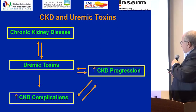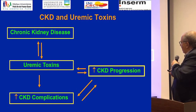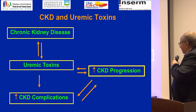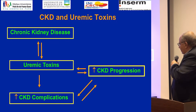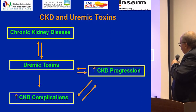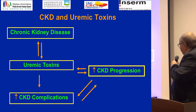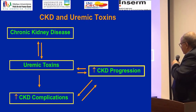The story is simple. When you have chronic kidney disease, you have an accumulation of uremic toxins. These uremic toxins have two actions: one of them is CKD complications like cardiovascular complications, and another one is accelerating CKD progression. And if one day CKD progresses to an advanced stage, these complications become more important.